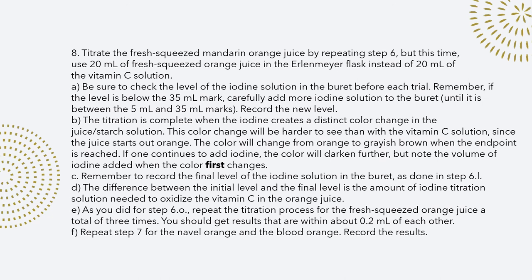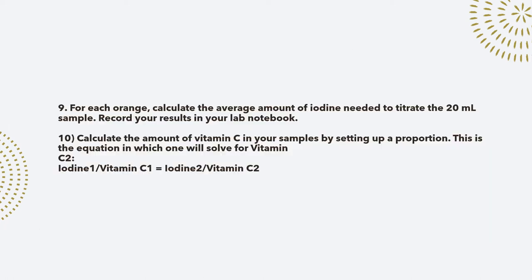After completing all my trials for the mandarin orange, I did the same with the blood orange and the navel orange, making sure that I recorded the initial milliliters and the final milliliters, took the difference between them, and made sure they were all within 0.2. The color for the mandarin orange was a grayish orange color. For the blood orange, it was a little harder to tell because the juice is red, so it just turned a darker red. After running through all of my trials, I calculated the amount of vitamin C using the equation and recorded it.